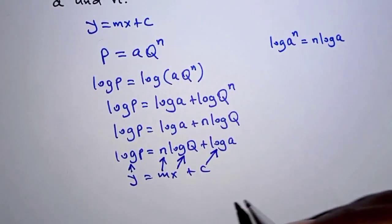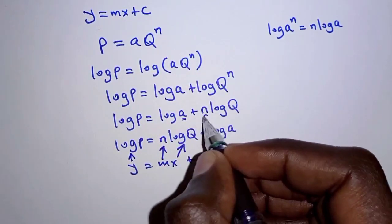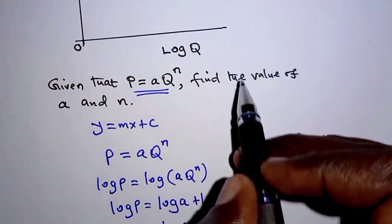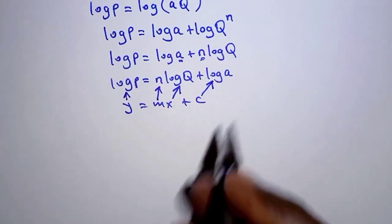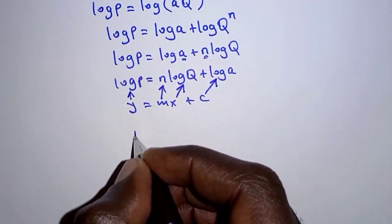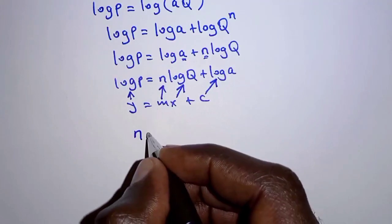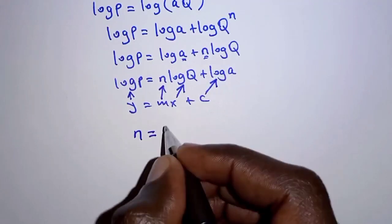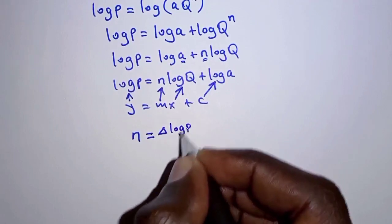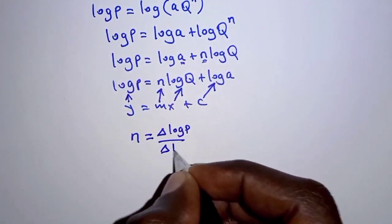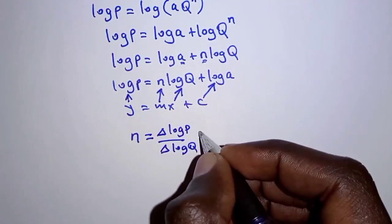So if we're required to determine the values of A and N, remember that is what we're asked in the question. For us to determine N, N we've seen is the gradient of the line. So N is obtained by getting change in log P over the change in log Q.